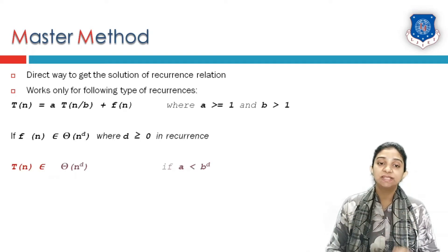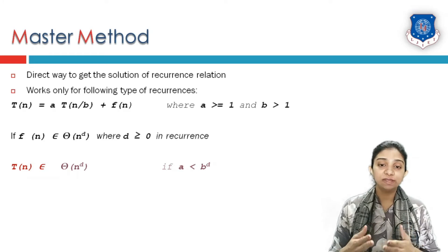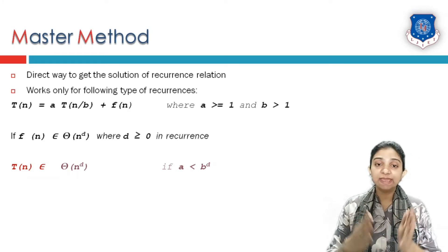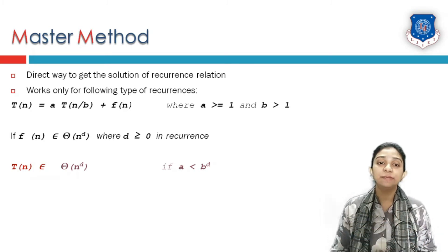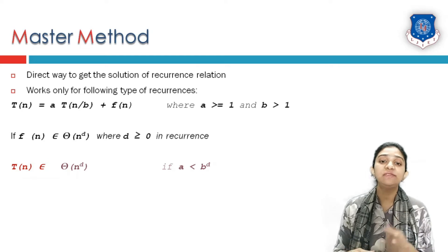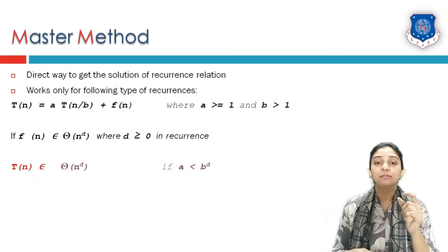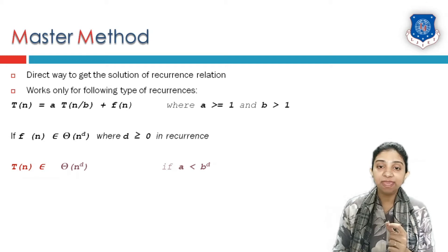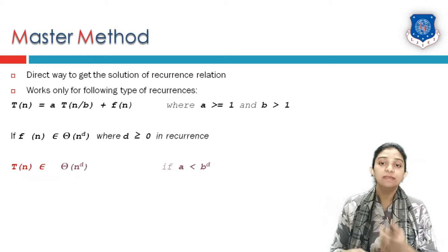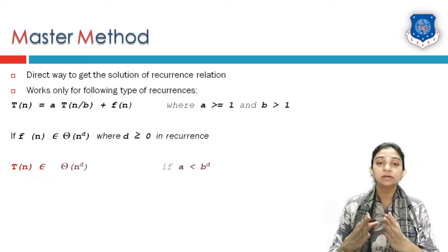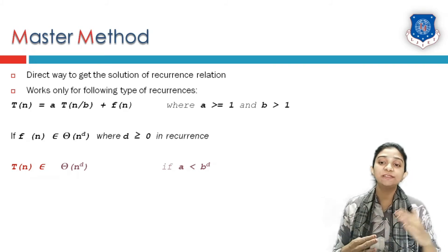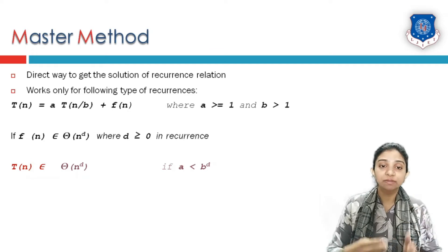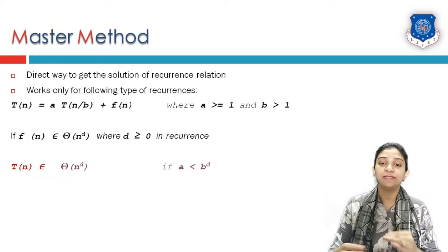Case 1: T(n) is in Theta(n^d) if a is less than b^d. From the equation we identify three components: a, b, and d. We then compare term a with b^d. If a is less than b^d, the complete equation T(n) is in Theta(n^d).